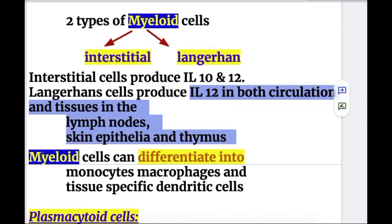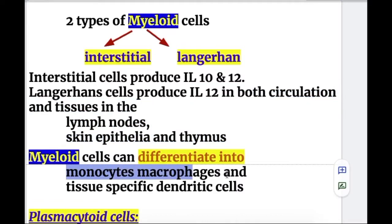Another key property of myeloid dendritic cells is that they can differentiate into monocyte macrophages and tissue-specific dendritic cells.